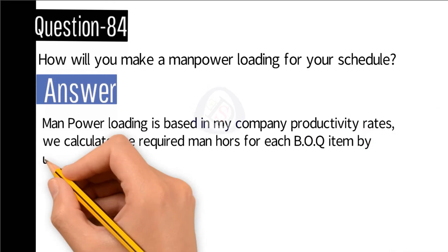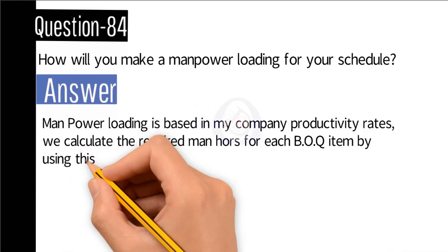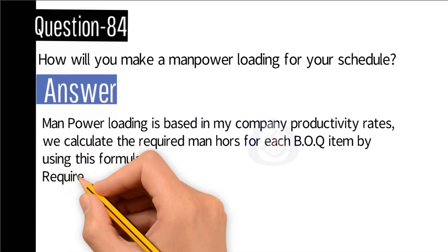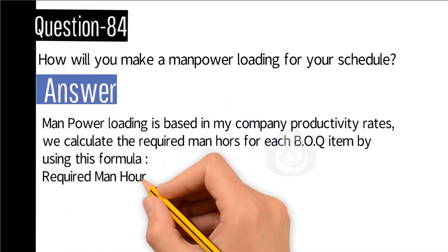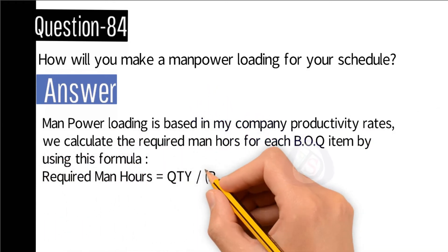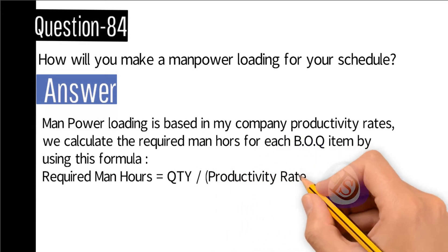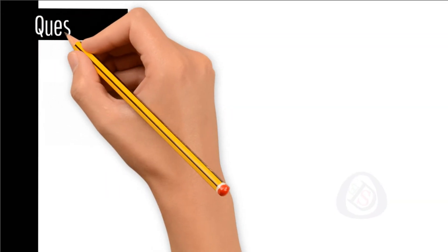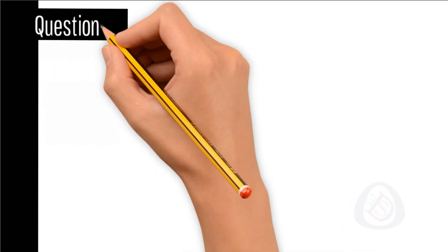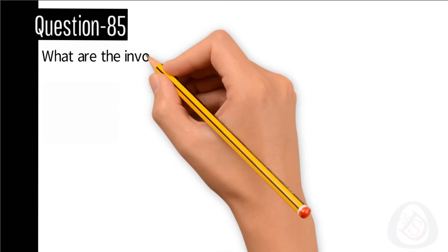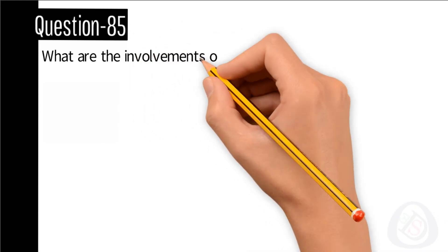Required man-hours = Quantity ÷ Productivity Rate.